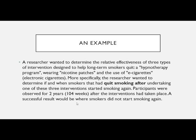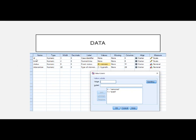A researcher wanted to determine the relative effectiveness of three types of interventions designed to help long-term smokers quit: a hypnotherapy program, wearing nicotine patches, and the use of e-cigarettes. The researcher wanted to determine if and when smokers who had quit after undertaking one of these three interventions started smoking again. Participants were observed for two years — 104 weeks — after the interventions had taken place. A successful result would be where smokers did not start smoking again. The data includes: ID number, time until they started smoking again, status (0 = censored, 1 = had the event of smoking), and the intervention type.